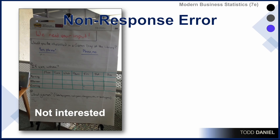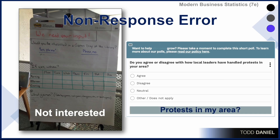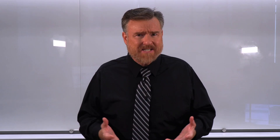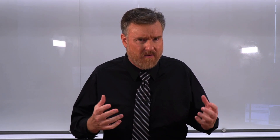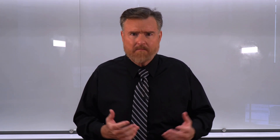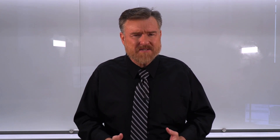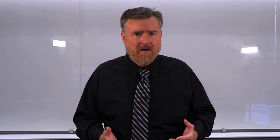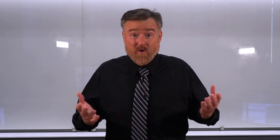Another survey item I encountered asks, do you agree or disagree with how local leaders have handled protests in your area? Agree, disagree, neutral. You might first notice that it should be agree, neutral, disagree. But given that — how am I supposed to answer this? It's asking about protests in my area and how the leaders dealt with it. Were there protests in my area? If there were, I didn't know about it. What protests were these?